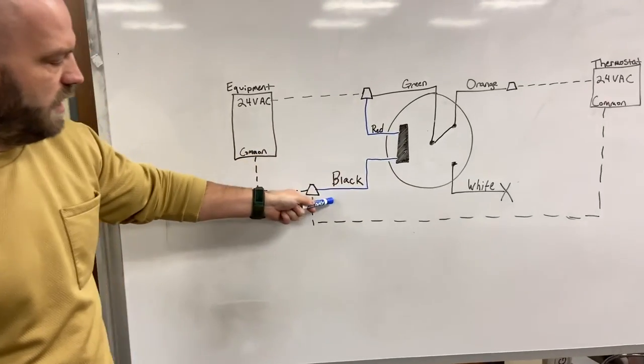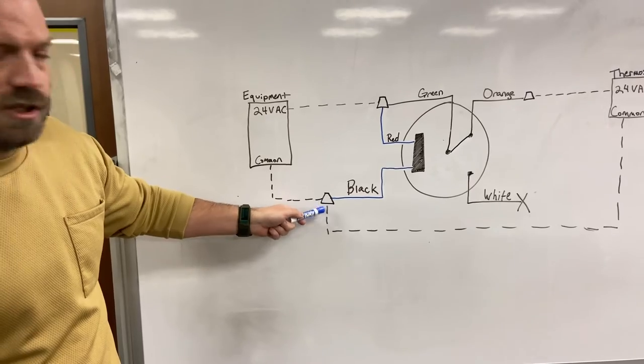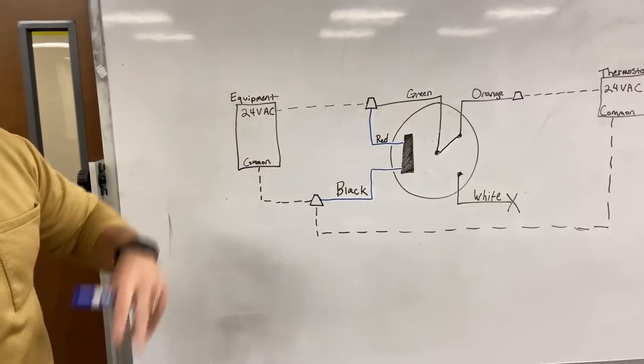It's going to come out this black wire here, which is then pigtailed back in with our common, as you saw before, and goes through. So we now have two loops.